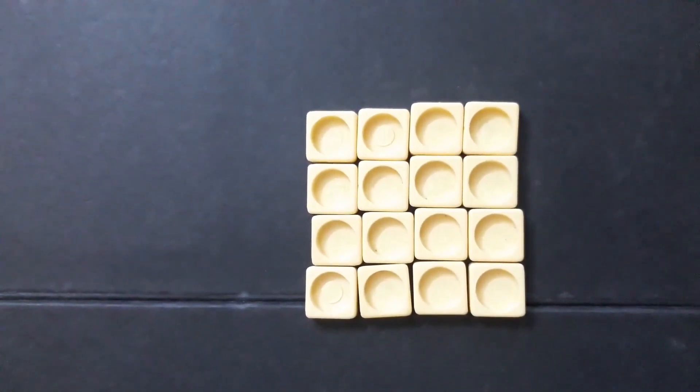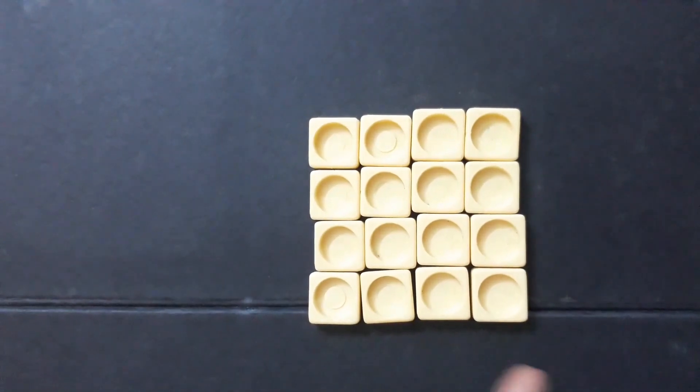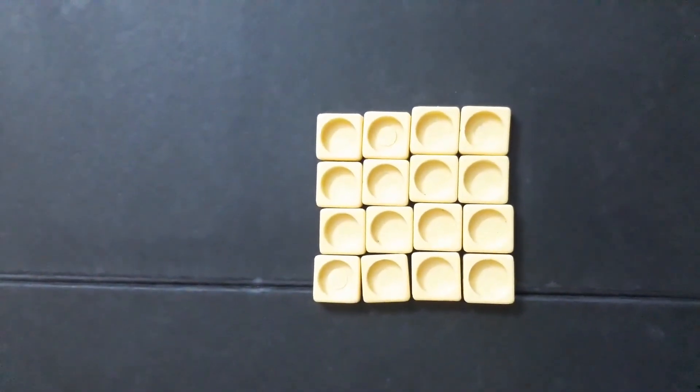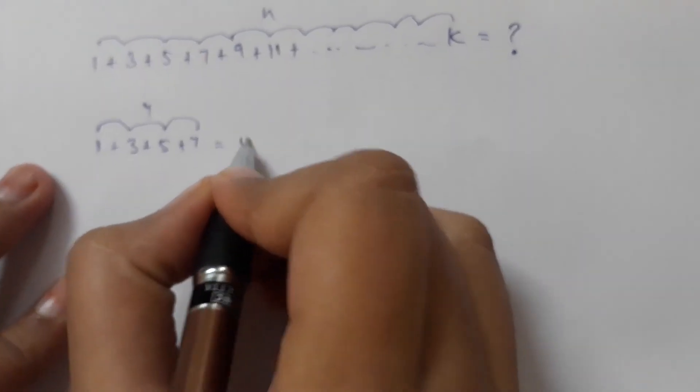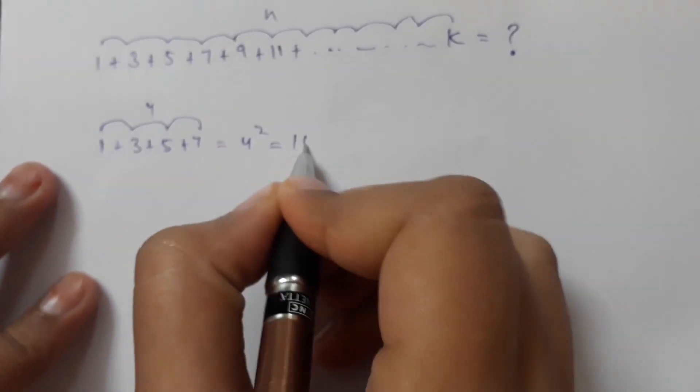As you know, the perfect square of 4 is 4 into 4, which is 16. So the sum of the first 4 odd numbers is 4 square, which is equal to 16.